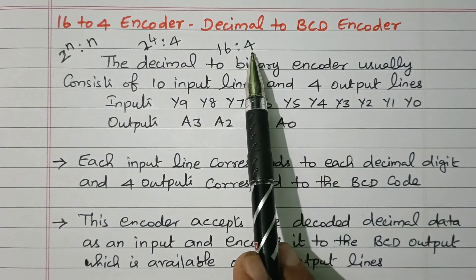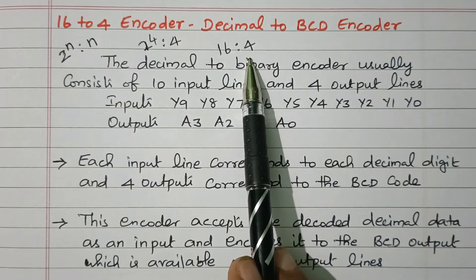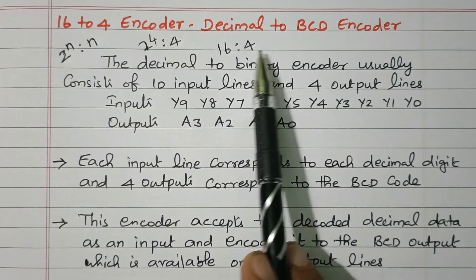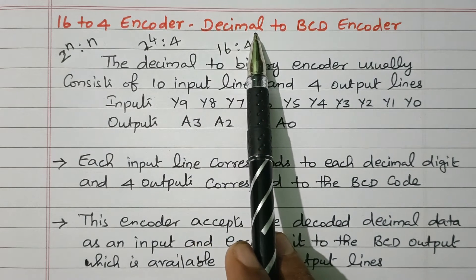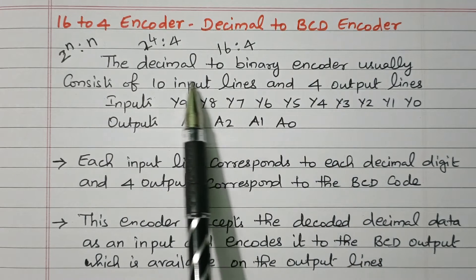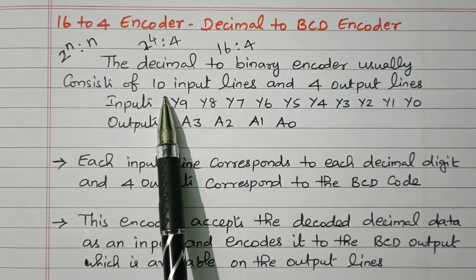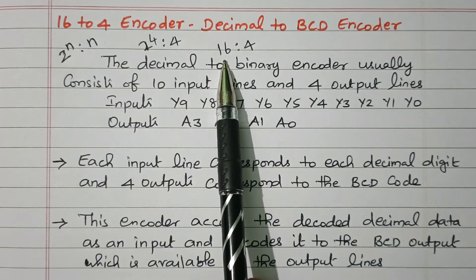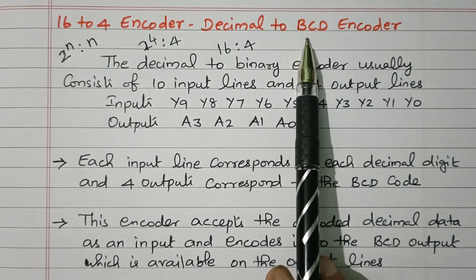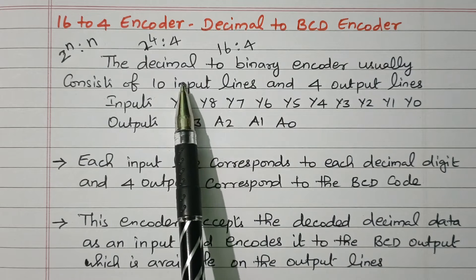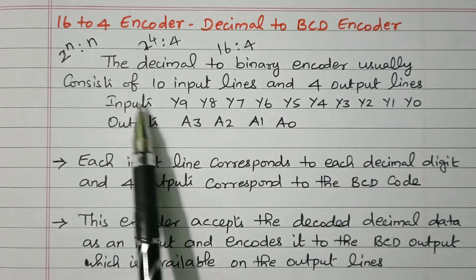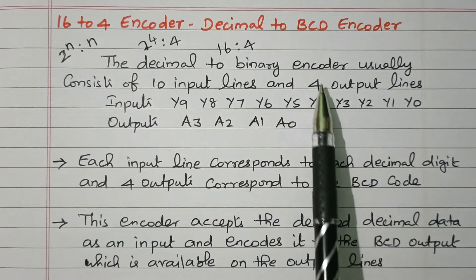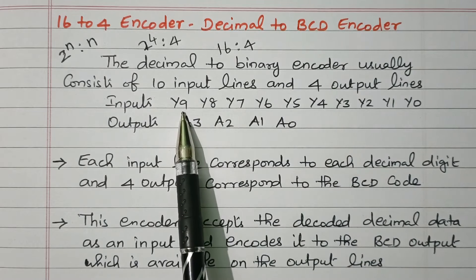Binary coded decimal means 4 digits. This encoder produces 4-digit outputs, so it is also called a BCD encoder. With 16 inputs it is called a decimal to BCD encoder. The decimal to binary encoder usually consists of 10 input lines — here 16 input lines are available, but only 0 to 9 are valid BCD. From 10 onwards we go to different digit formats, so we consider only 10 inputs and 4 output lines.